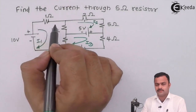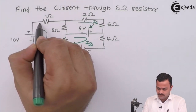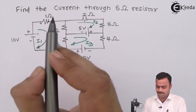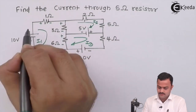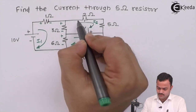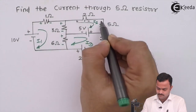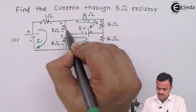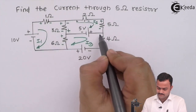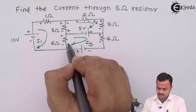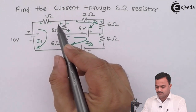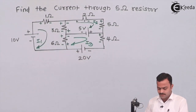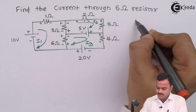Whenever current flows through a resistor, it will develop a voltage drop across it — plus to minus in the direction of current. So let's mark all the voltage drops for mesh one and mesh two. After applying currents to the circuit and marking the voltage drops, we are ready for application of KVL.